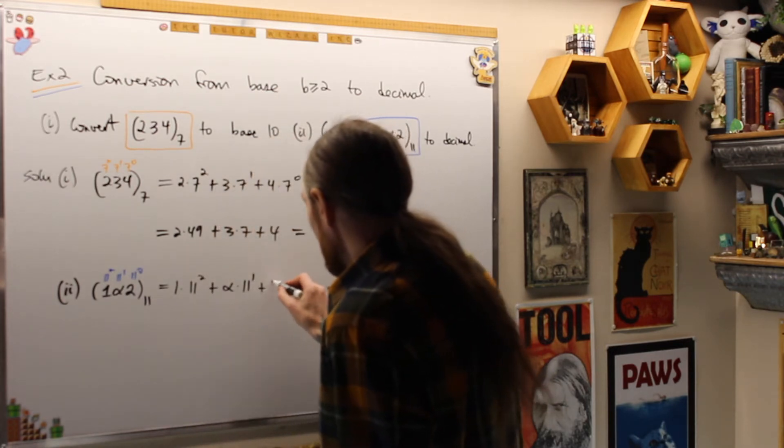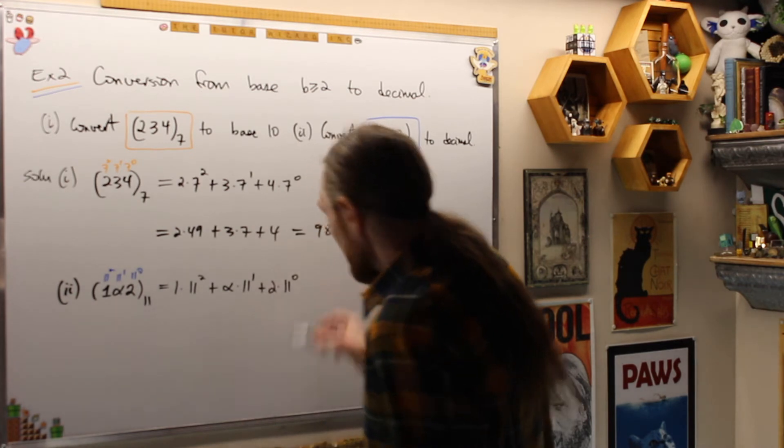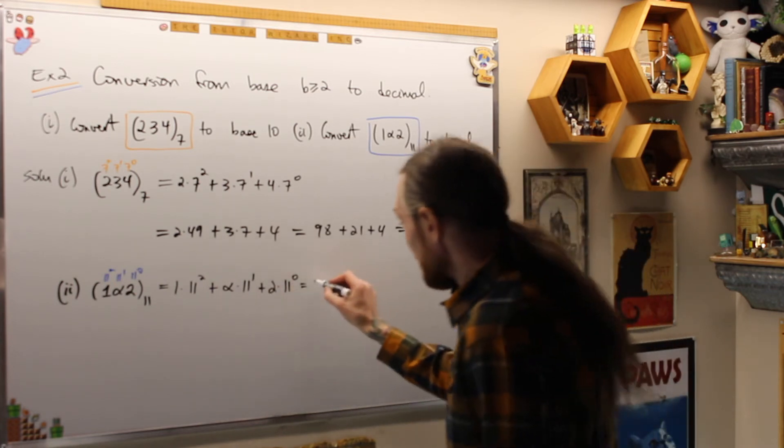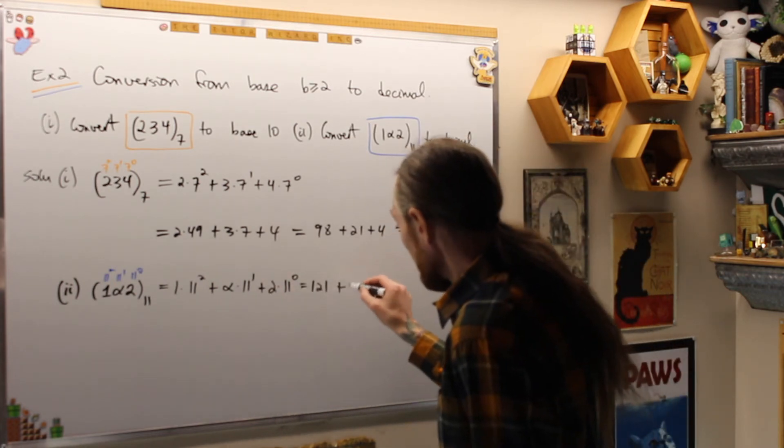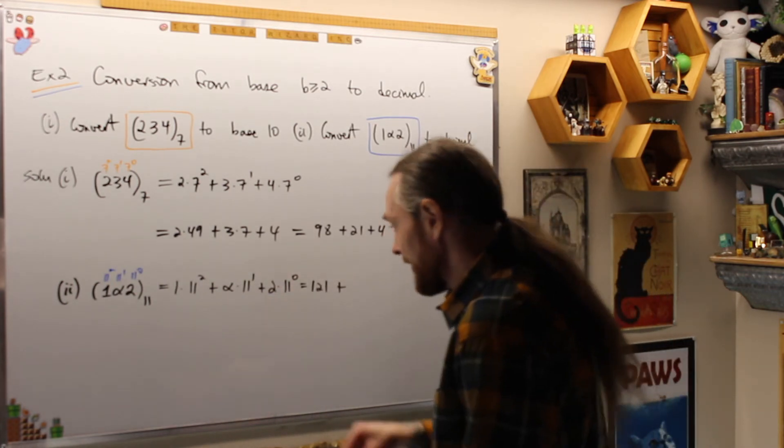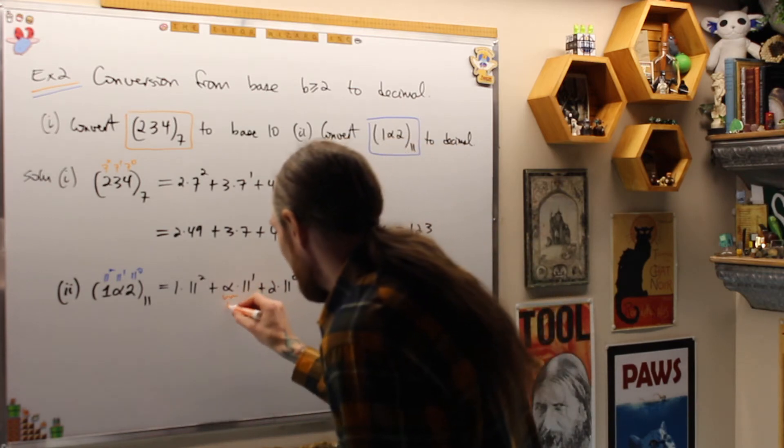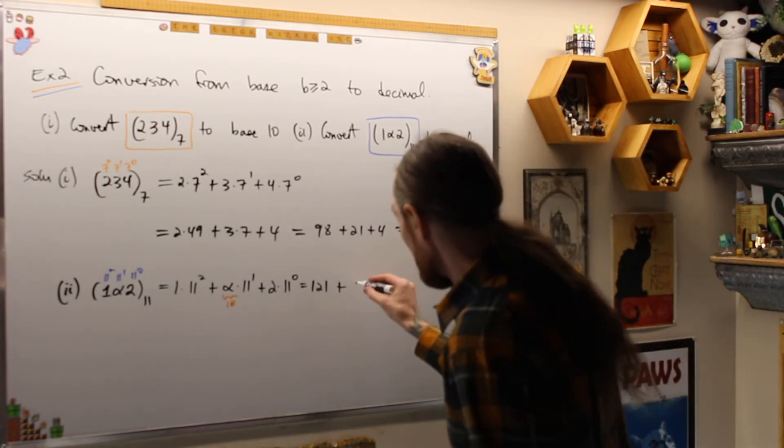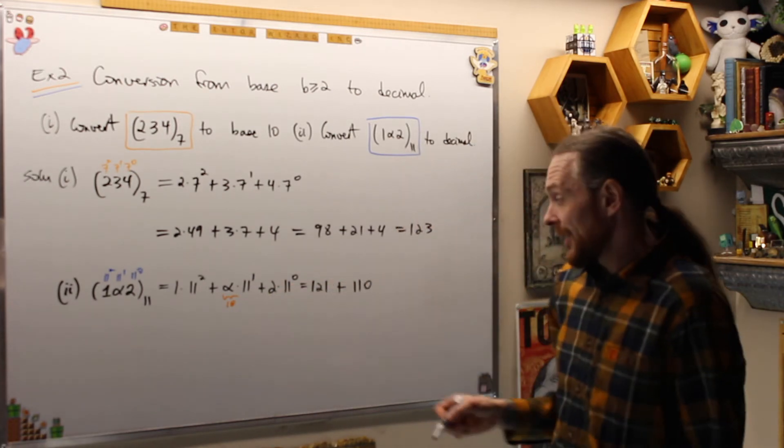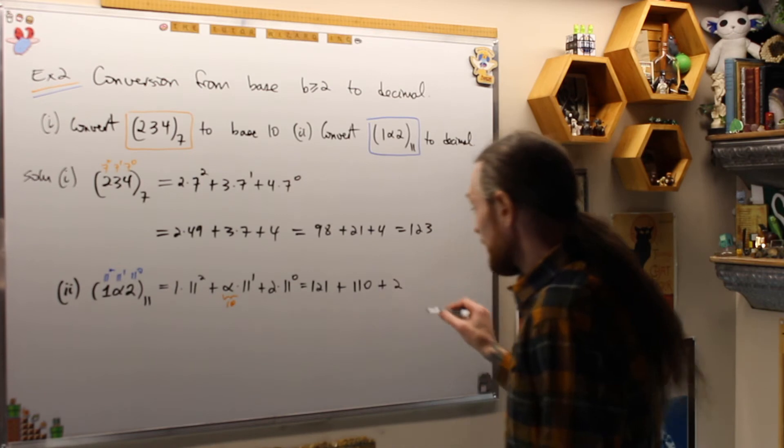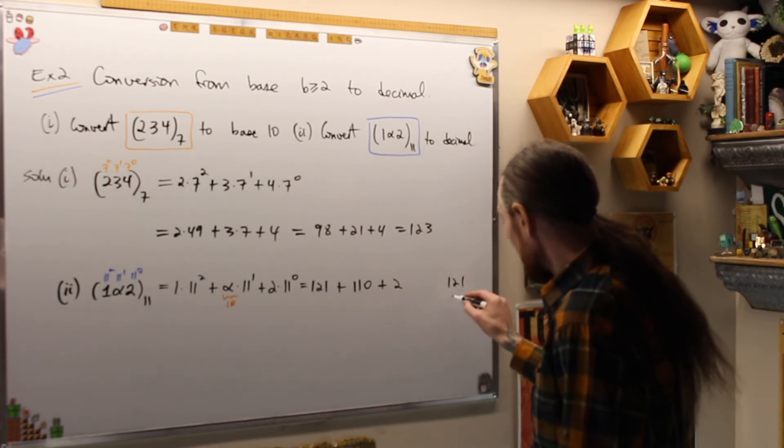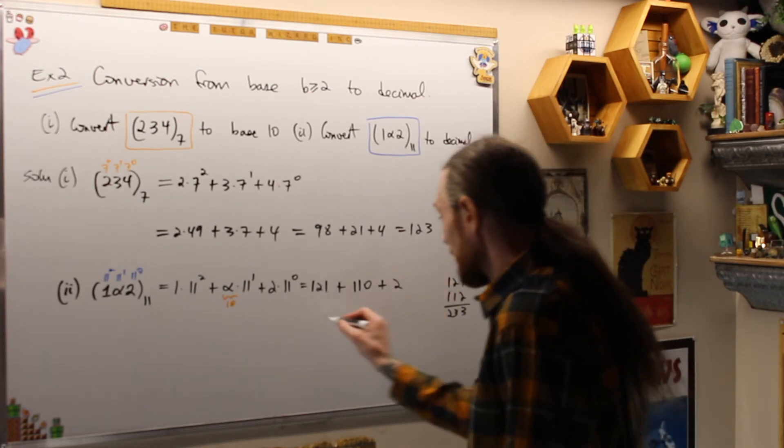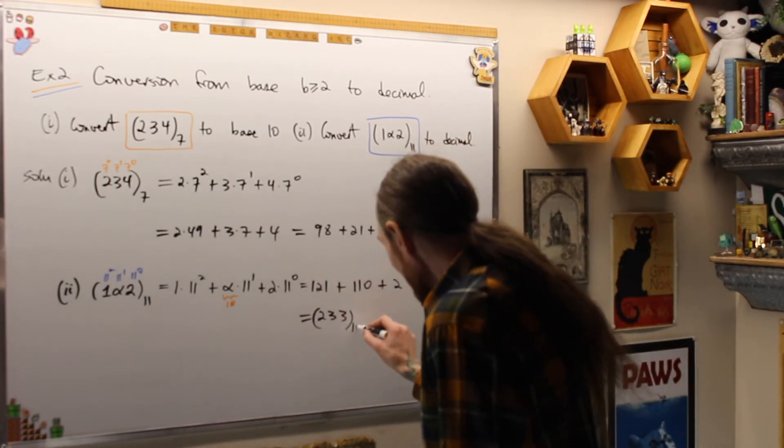Which is now equal to 11 squared is 11 times 11, which is 121, plus 10. This is now a 10, remember, in base 10. And then finally, so that's going to be 110 plus 2. Again, if I can't see it, 121 plus 112 is going to be equal to 233. So we're going to get equals 233 base 10.